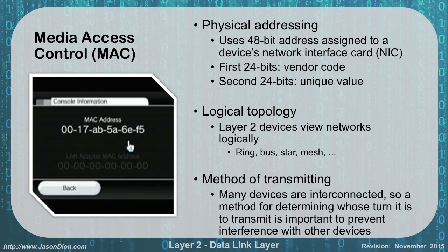We have different ways of transmitting our data, and many of our devices become interconnected, so we have to have a way to determine whose turn it is to talk. In a classroom, we do that by raising our hand — if 30 students all started shouting out questions, no one could be answered. On a network, devices don't raise their hand, but we have ways they can signal readiness to communicate, or if they see a collision, repair it by retransmitting. We have to have those ways to detect and avoid collisions.